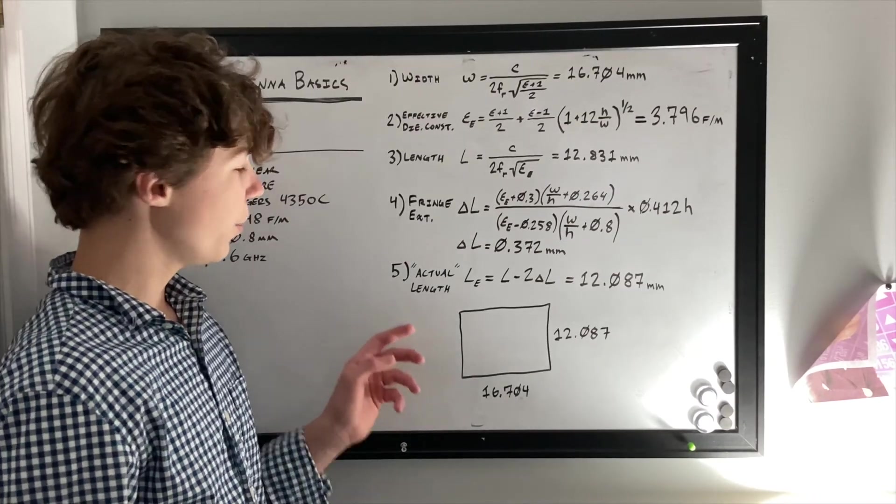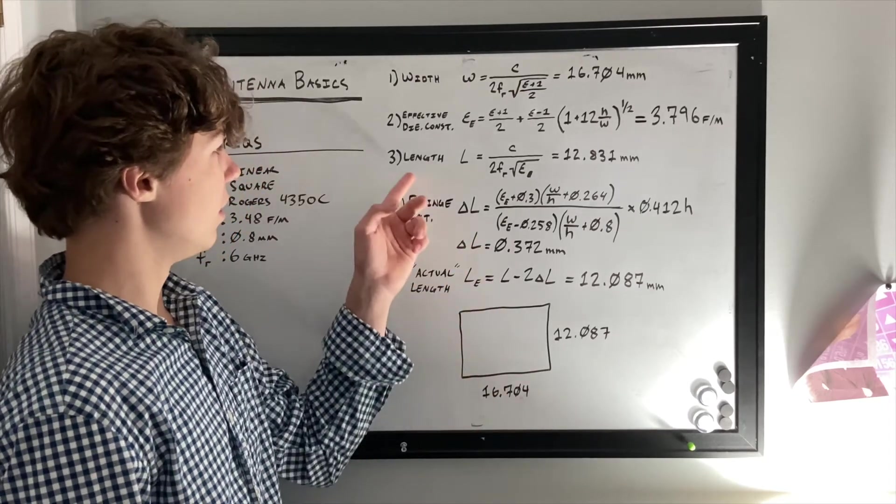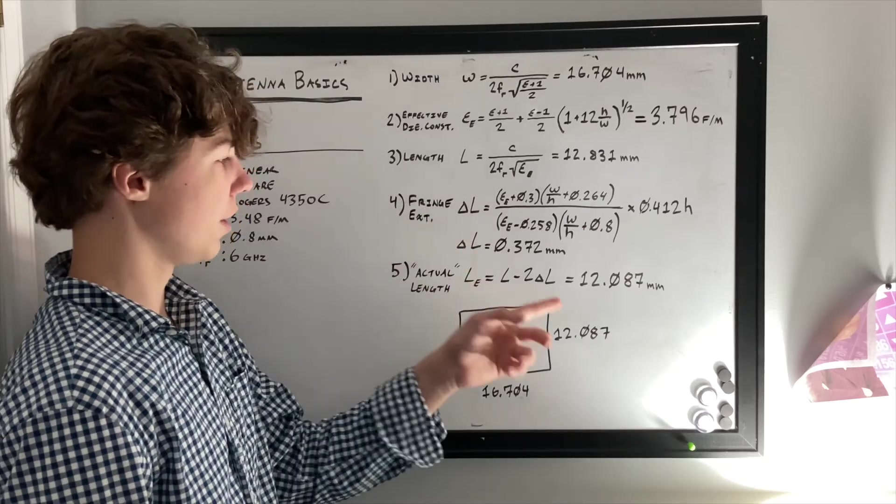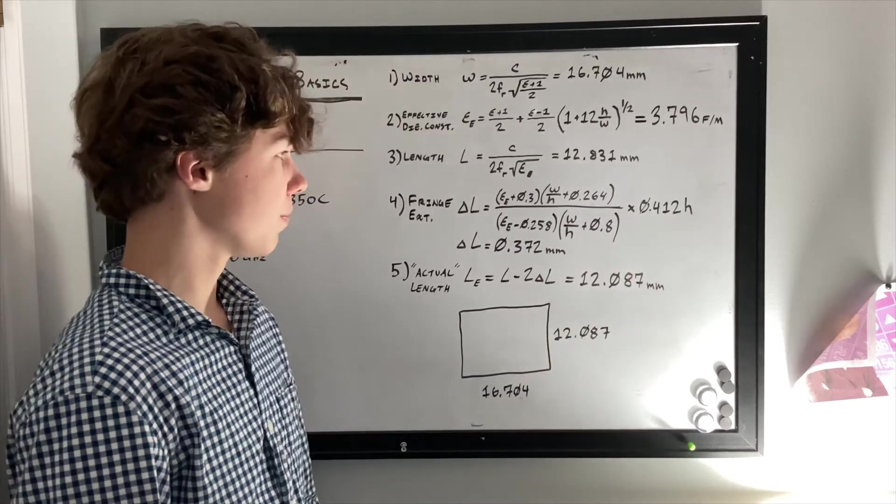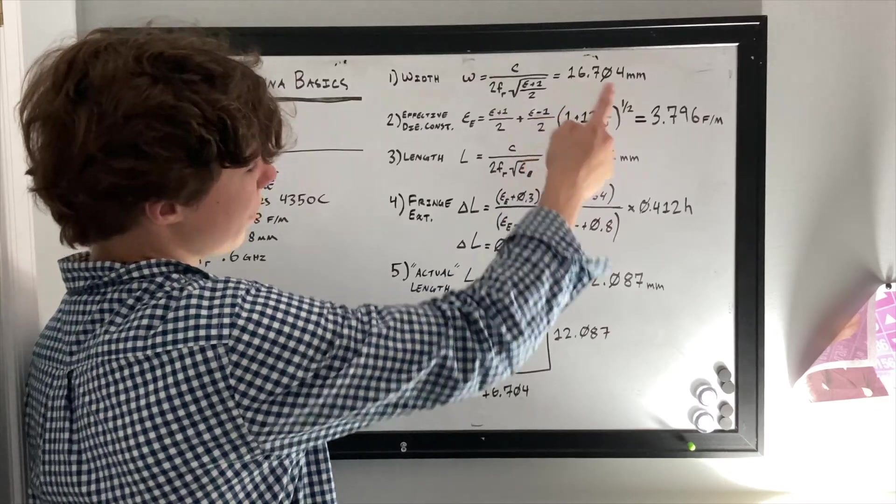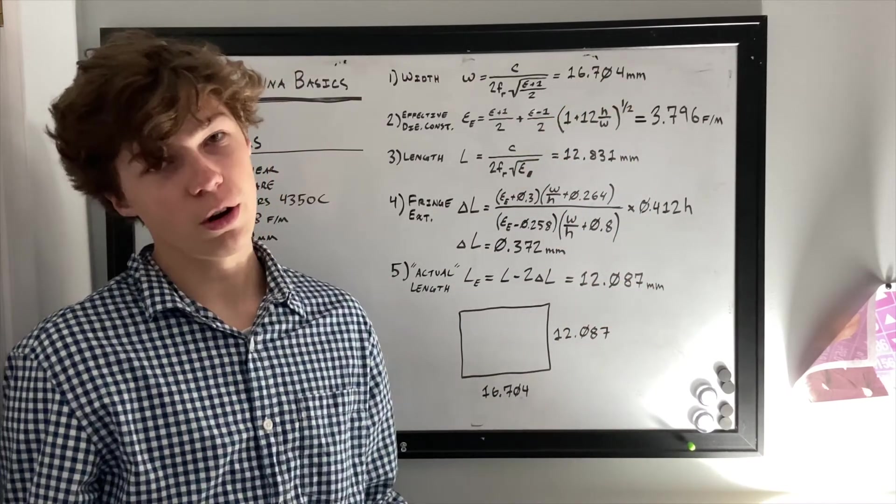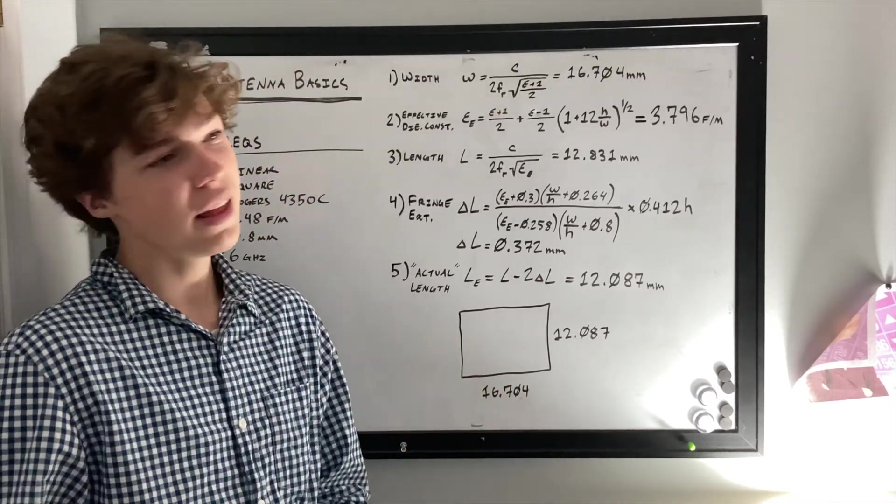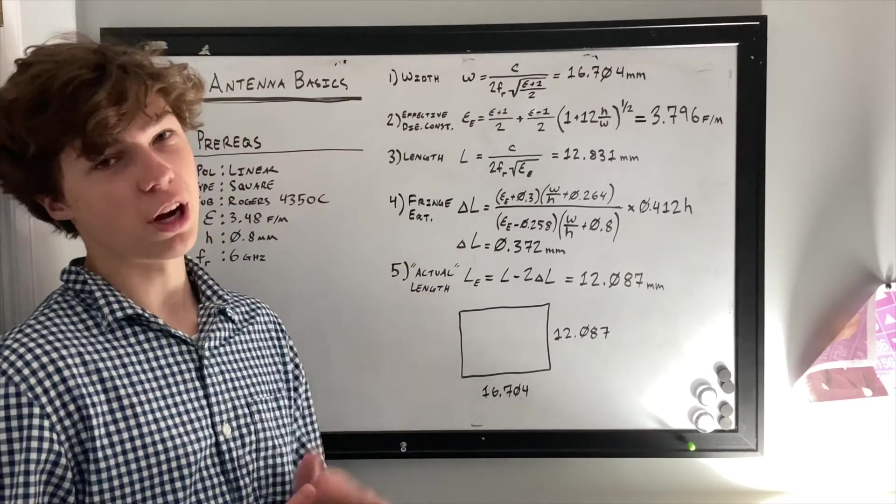Okay, so now we have the actual length calculated by the original length minus 2 times the delta length, or the fringe length. And for that, we're getting 12.087 millimeters. And now we have our final dimensions with length. I say final in air quotes, because you'll see that it's not going to exactly resonate at our target resonant frequency first try. This is difficult, because these equations don't take into account a lot of things.